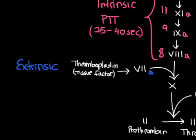So the extrinsic coagulation pathway is measured by the prothrombin time, PT, which normally is anywhere from 12 to 15 seconds. So if this is prolonged, you know that there's something wrong with the extrinsic part of the pathway.